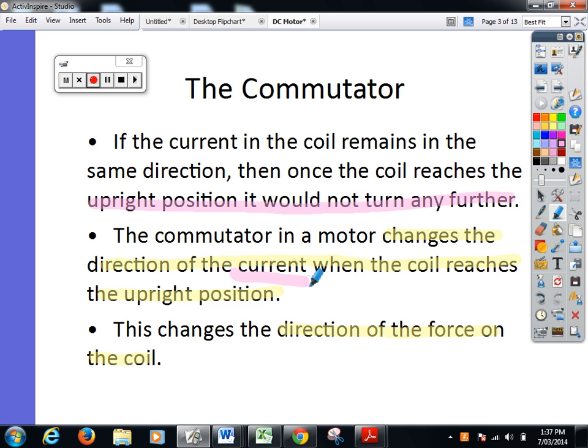Now, apart from having magic current fairies on the outside switching the current backwards and forwards, we need to have a design for this to work. Are we okay with what the second function of the commutator is? Recap: the first function is it provides a way for the current to get into the coil. And second, it's designed in a split ring formation so that when the coil reaches the upright position, for every half turn, it will reverse the current in the coil. When the coil's current reverses, the force direction will also reverse.